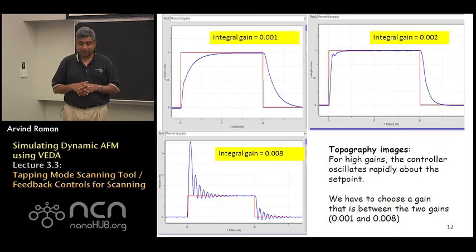And what we find is that if one tries to improve the ability of the AFM to track the exact surface, if we try to focus on that a little more we find that if the integral gain is increased to the control gain increases to .008 then we actually get a controller instability.